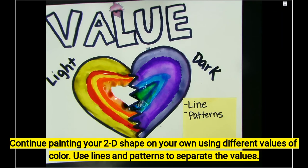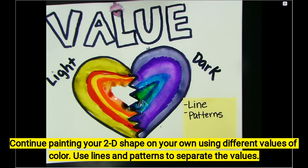Alright artists! So again, your activity for today is to create a 2D shape using light and dark values, separating it with a line in the middle, and adding colors on each side — or objects that you find at home. Good luck everyone!